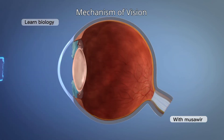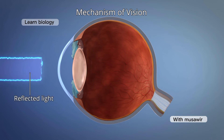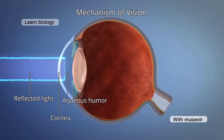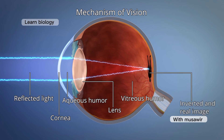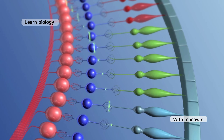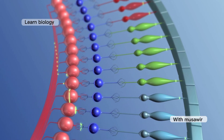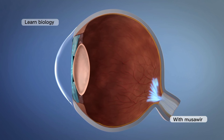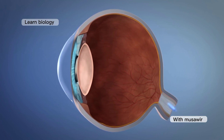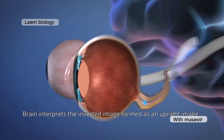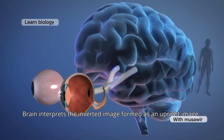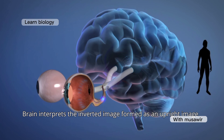Mechanism of vision: the reflected light rays from the object enter the eyes through the cornea, aqueous humor, lens, and vitreous humor. The image on the retina is inverted and real. The photoreceptors convert light energy into nerve impulses. The optic nerve carries these impulses to the central nervous system. Our brain interprets the inverted image formed as an upright image of the object.